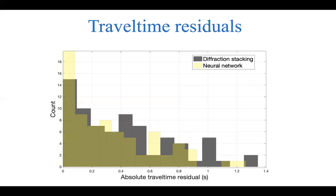To verify our solution, we use the forward engine to compute travel times at the inverted source locations for both diffraction stacking and neural network, and compare them with the observed p-wave travel time picks. The neural network gives smaller travel time residuals compared to diffraction stacking, indicating that the predicted travel times match the observed travel times better and giving us more confidence in the neural network solution.